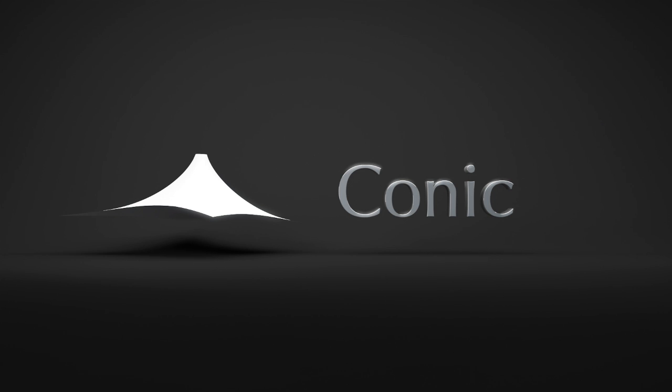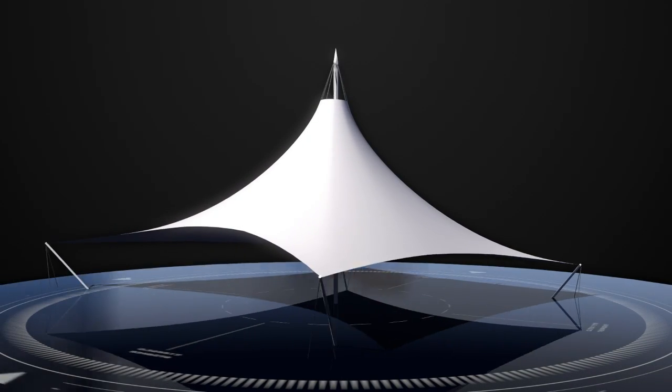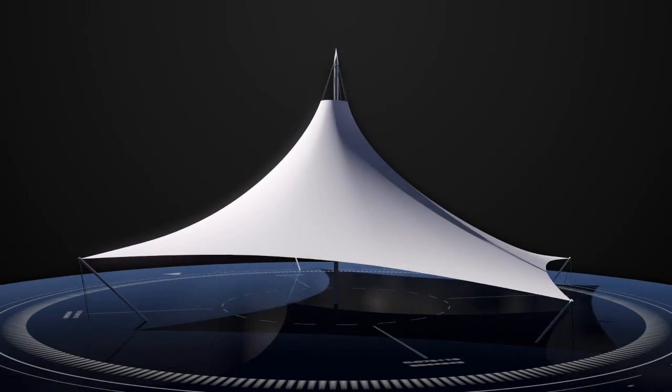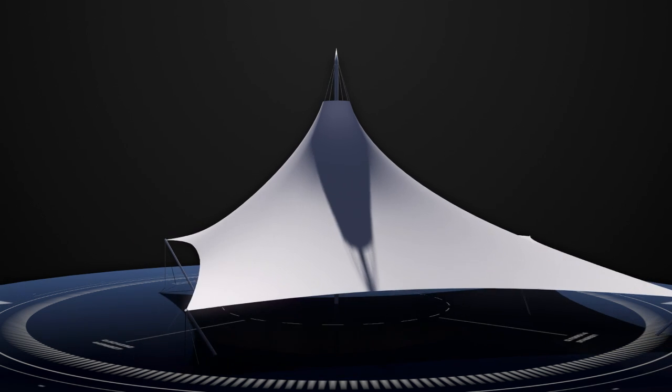The conic or umbrella form also adopts double curvature to give it strength. In this case, the loads are spread horizontally around the full fabric form and vertically from the apex to the base.